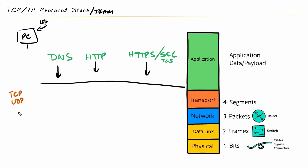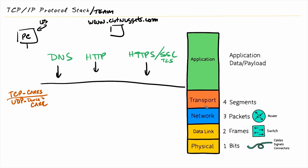Those are not the only two protocols, but those are the two we're going to see most of the time. TCP stands for Transmission Control Protocol. UDP stands for User Datagram Protocol. TCP is the protocol that cares and wants to make sure that any data sent from the PC going over to the CBT Nuggets website actually makes it. UDP is the layer four protocol that doesn't care. Importantly, you and I don't get to choose which protocol is used — it's based on the application. When they wrote application layer services like HTTP, HTTPS, and DNS, those applications call upon the appropriate layer four protocol they were designed to work with.